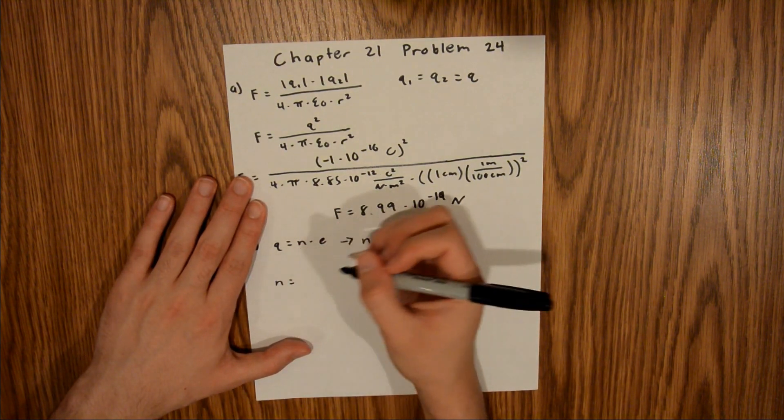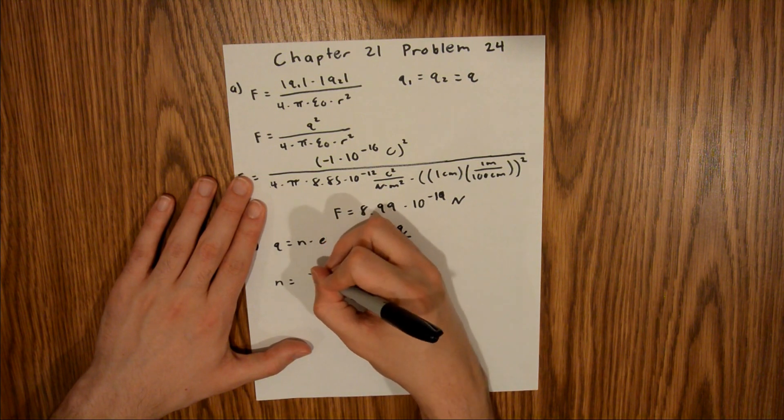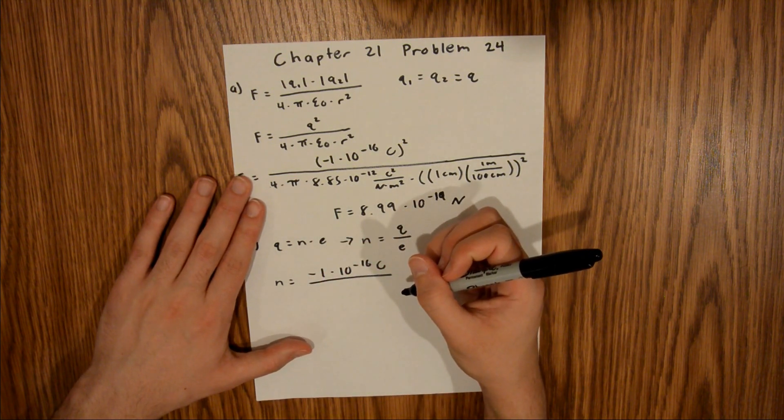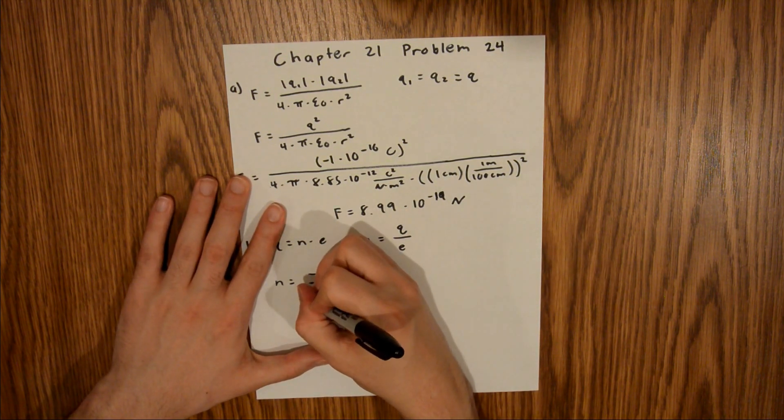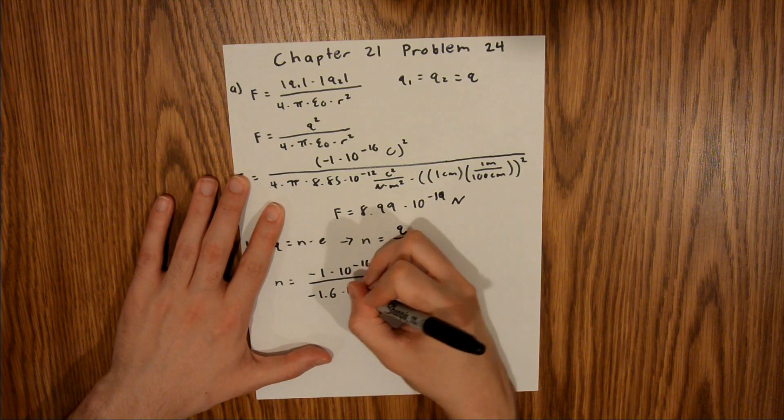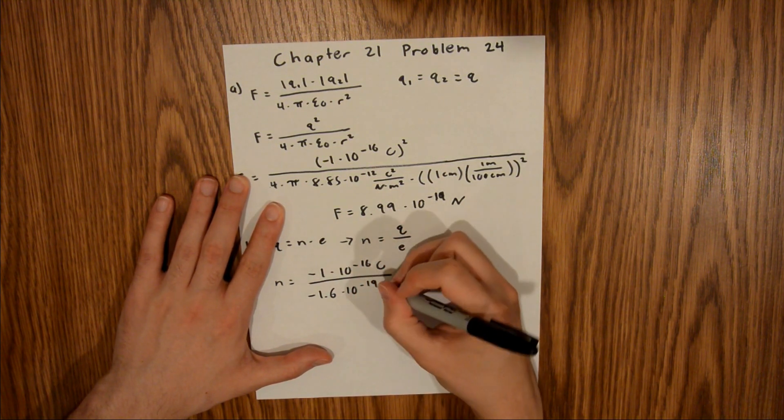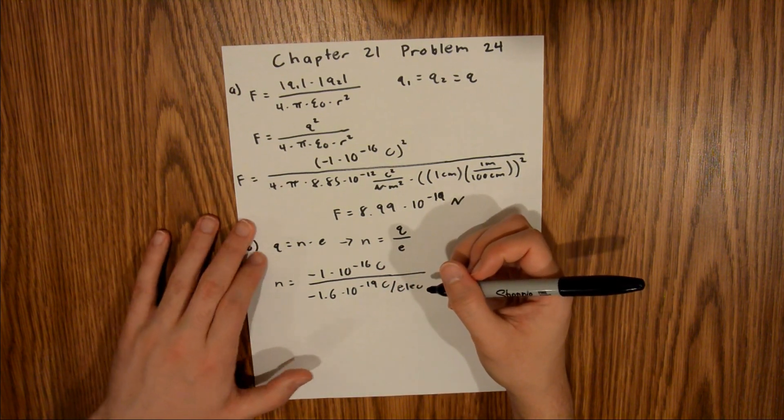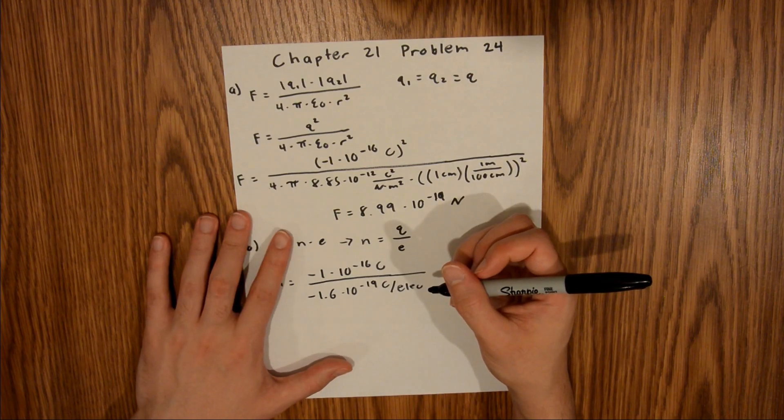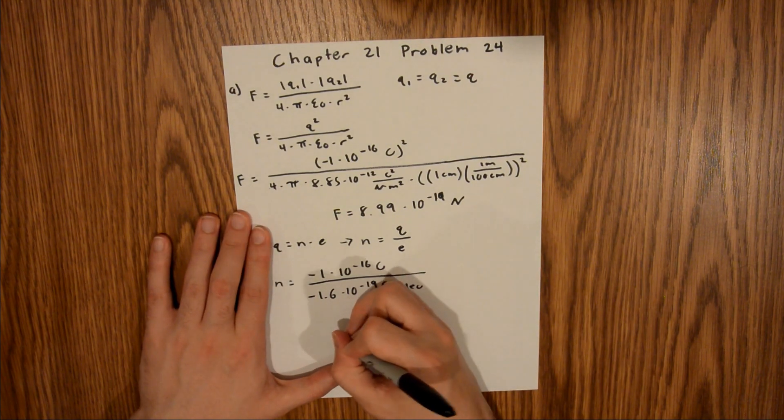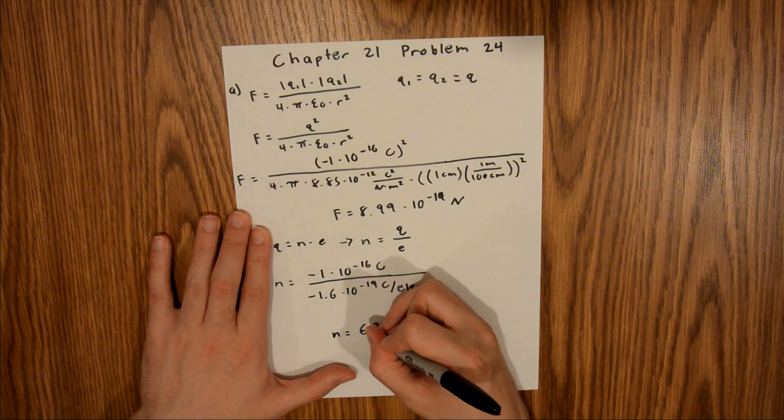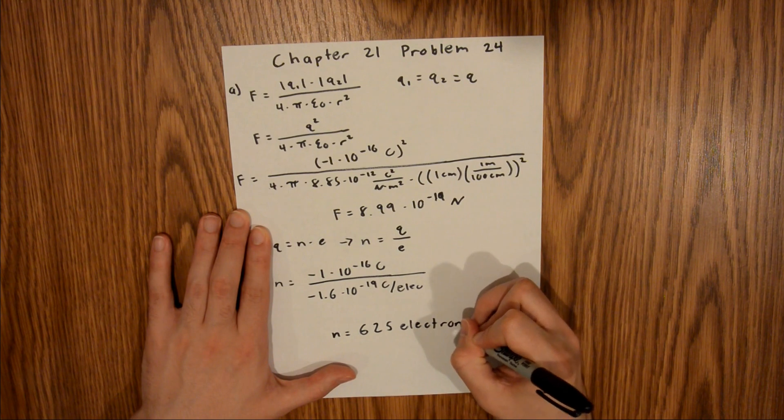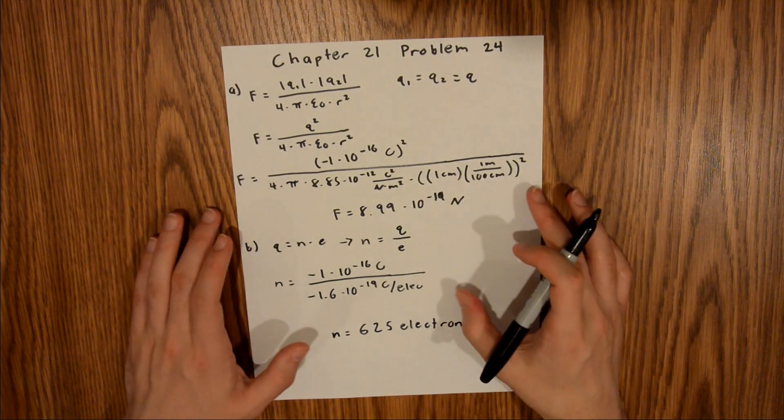So n is going to be equal to negative 1 times 10 to the negative 16th coulombs divided by the charge of an electron, which is negative 1.6 times 10 to the negative 19th coulombs per electron. If you plug that into your calculator, you will find that the number of excess electrons on each drop is equal to 625 electrons. That is your final answer for Part B.